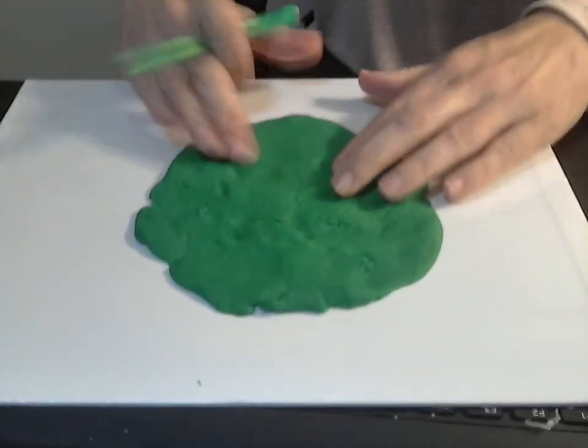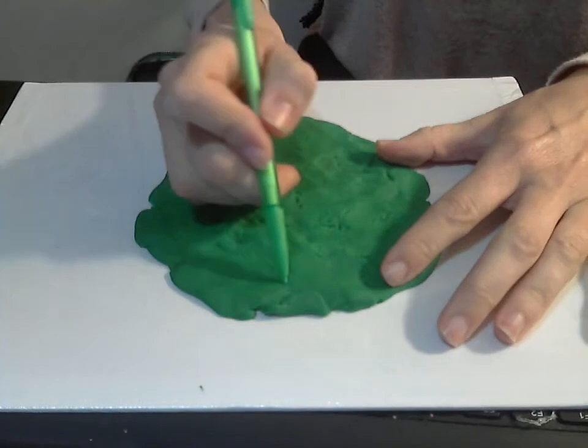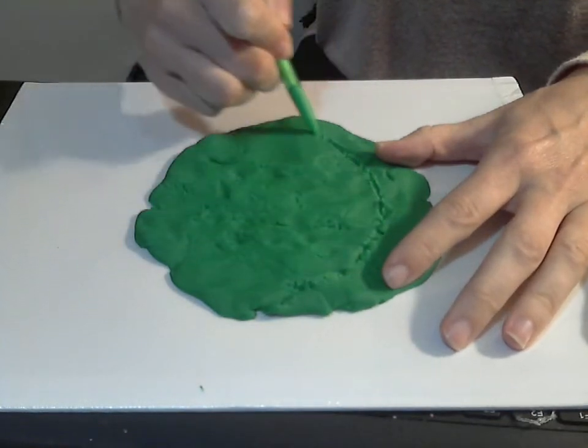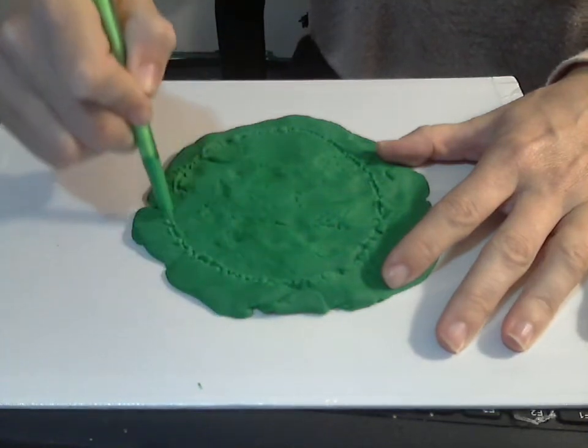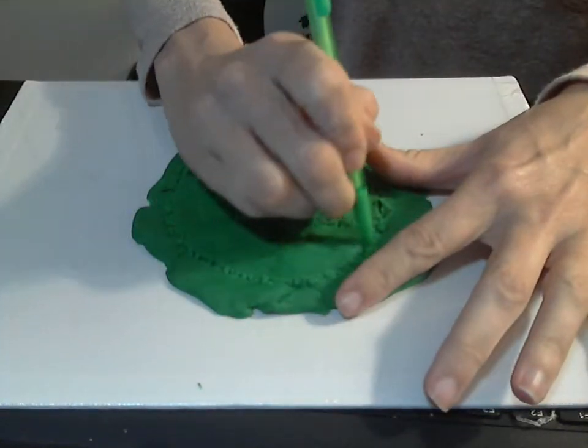And along the outside, I'm just covering up what we've just done. Along the outside here, I'm going to draw a circle. Like I said, you want it to be a little thick so they can get their pencil in there and trace.